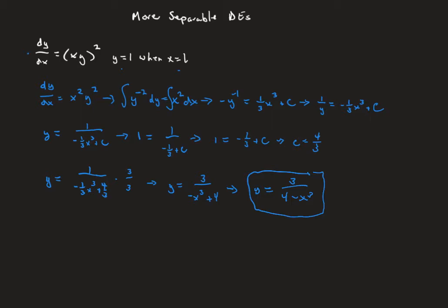This solution satisfies both the differential equation and the initial conditions. Now, what is the domain of our solution? A solution to a differential equation is only valid on a continuous domain. When we look at the domain of y = 3/(4 − x³), we can see there is a vertical asymptote when the denominator equals zero — that is, when x equals the cube root of 4. That's a discontinuity, which breaks the domain into two parts.